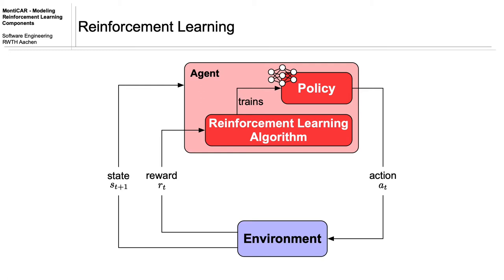Instead of training the agent on pre-existing data, the agent learns only by trial and error. The agent interacts with an environment that is represented by a set of finite states and a set of finite actions. Actions can either be continuous or discrete. At each time step, the agent selects an action according to its current policy. The environment answers with the next state and a numerical reward that measures the agent's performance.